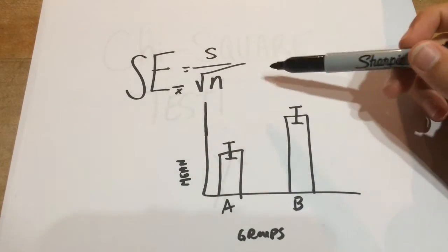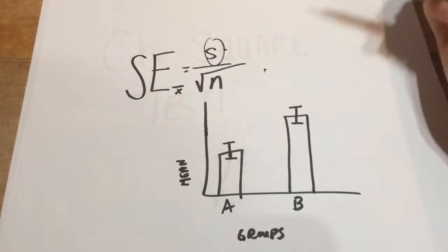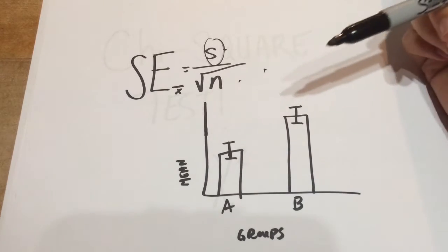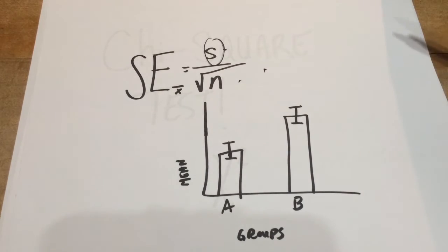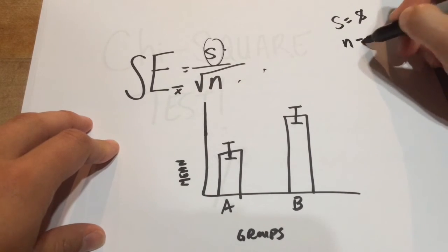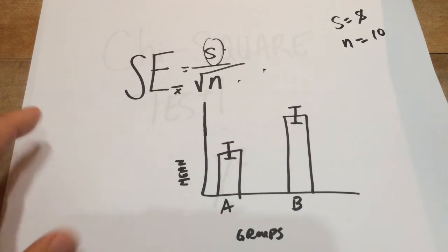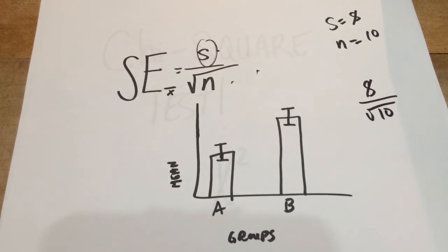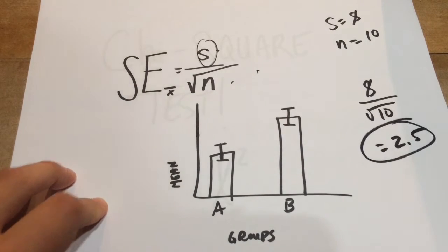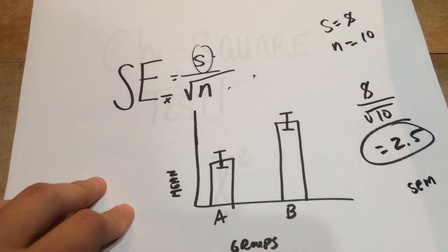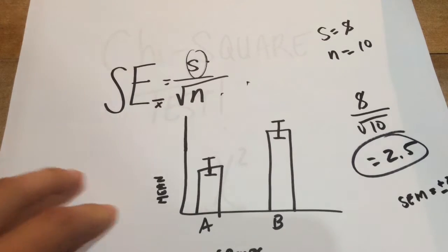If we're using standard error of the mean, again, this is our equation for that. We just get the standard deviation, and then we divide it by the square root of the number of our values. So for example, if say we just had a standard deviation of 8, and our values, we had 10 values in that data set, then we would take 8 and we would divide it by square root of 10, which would give us about 2.5 if we round it a little bit. So our standard error of the mean in this case would be about plus or minus 2.5 from the mean.